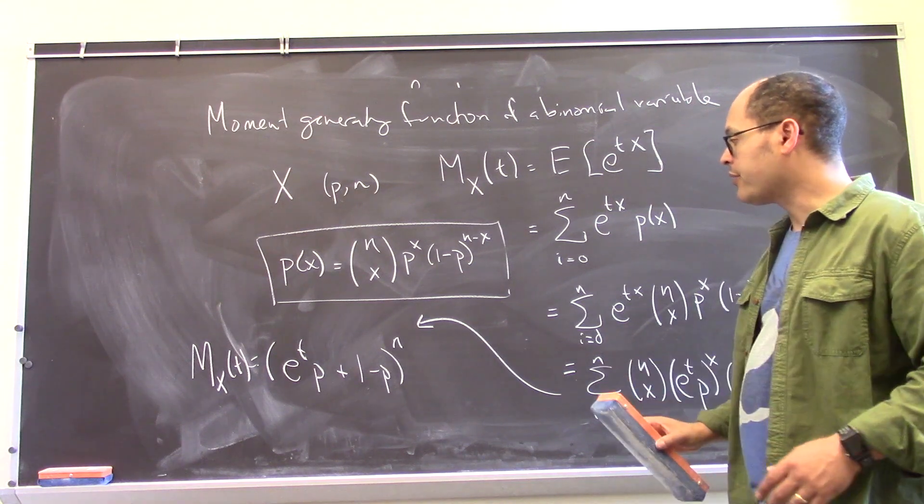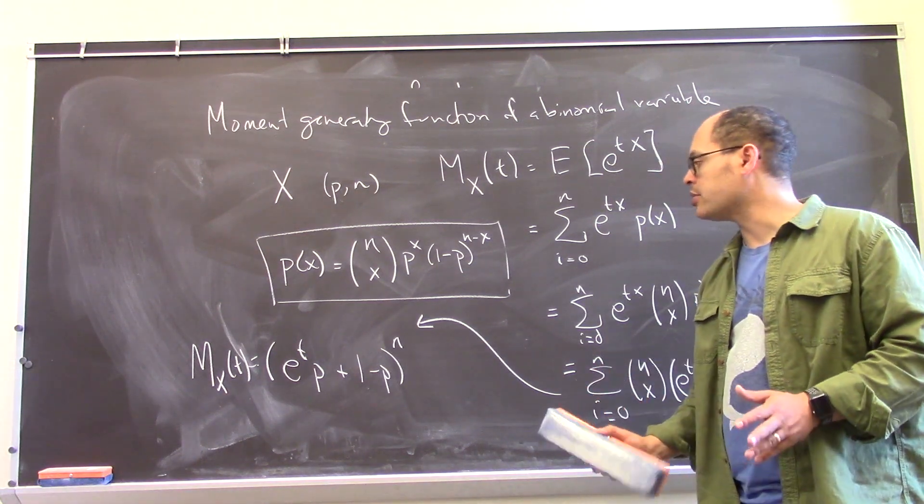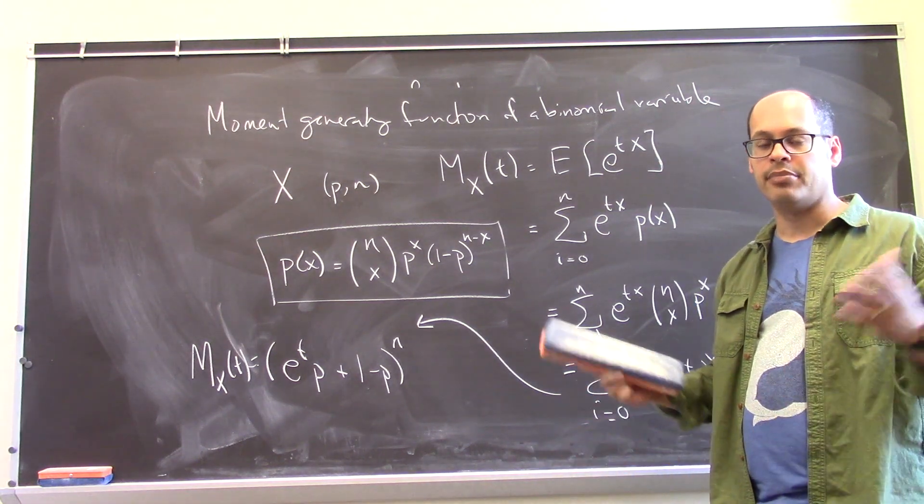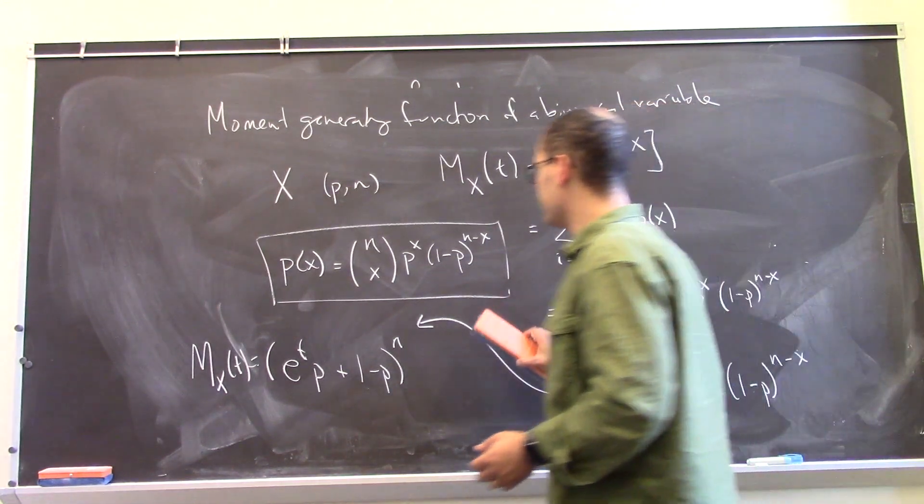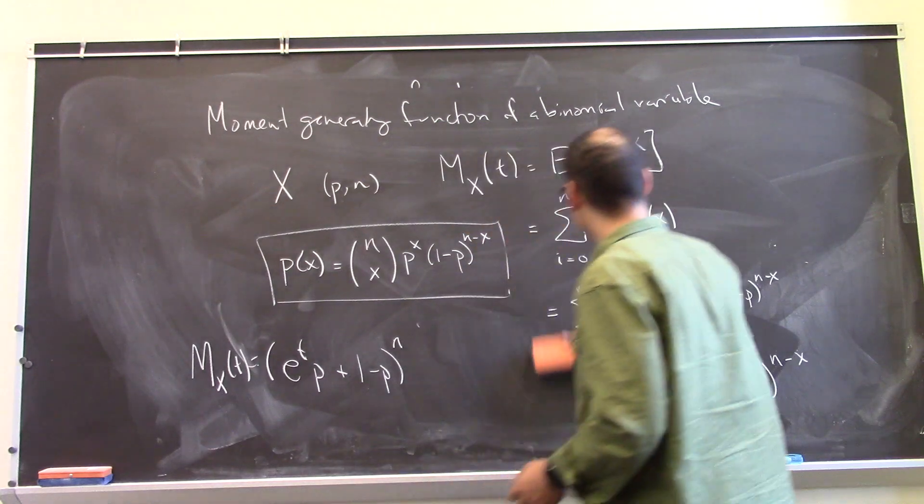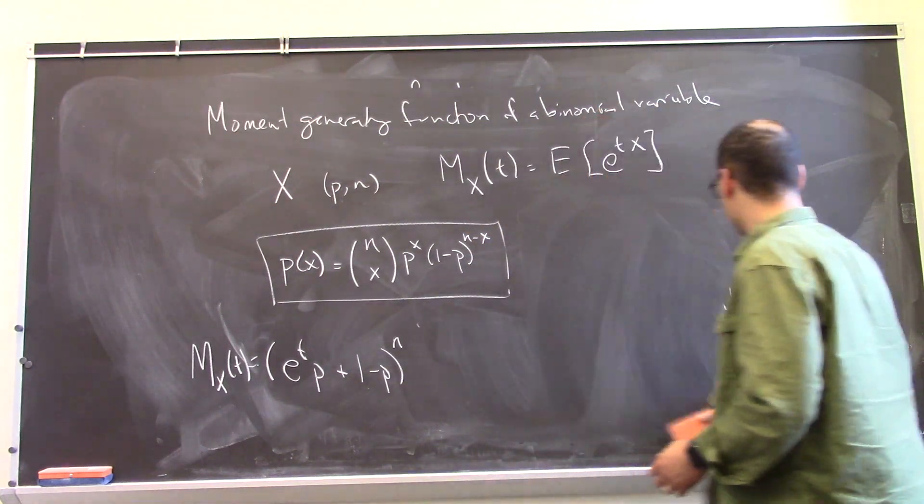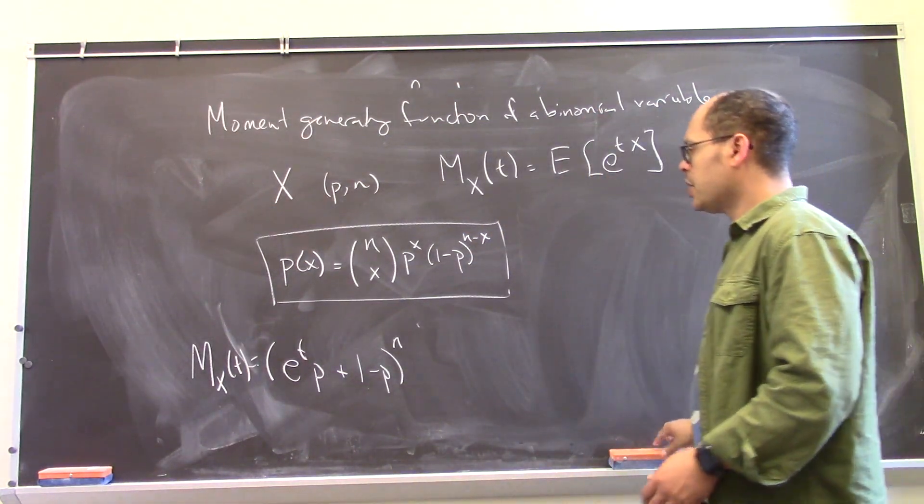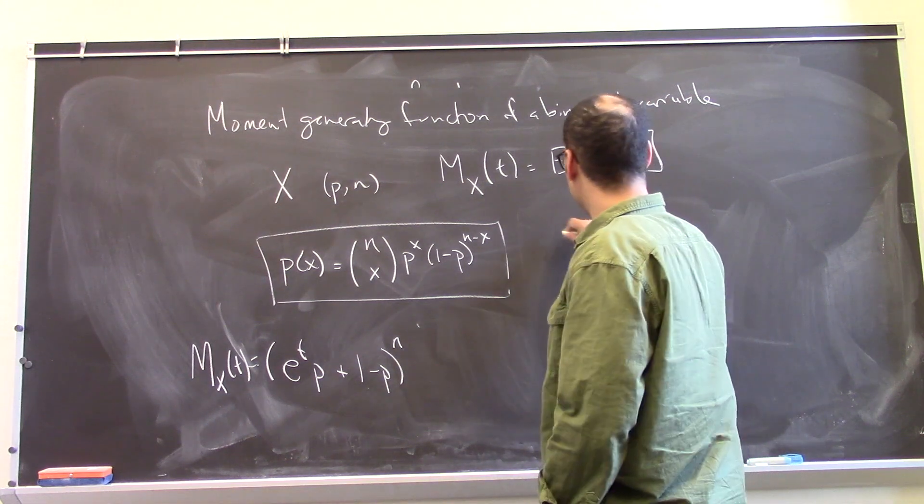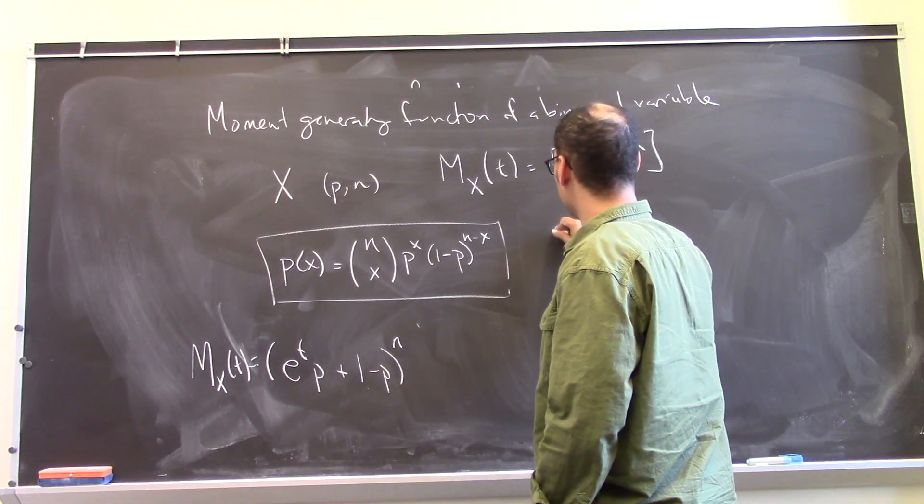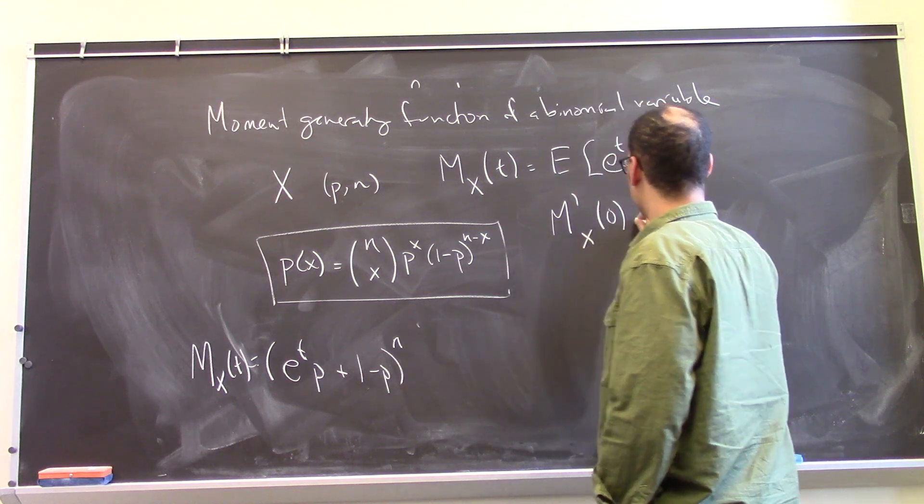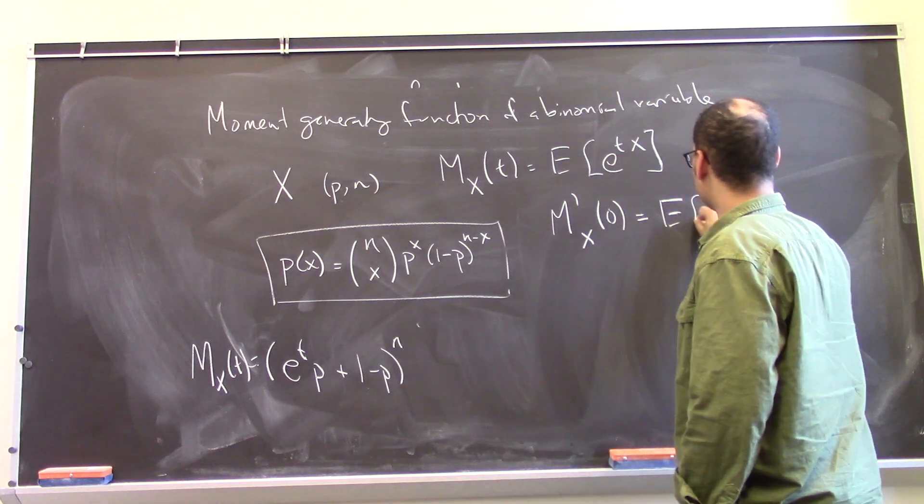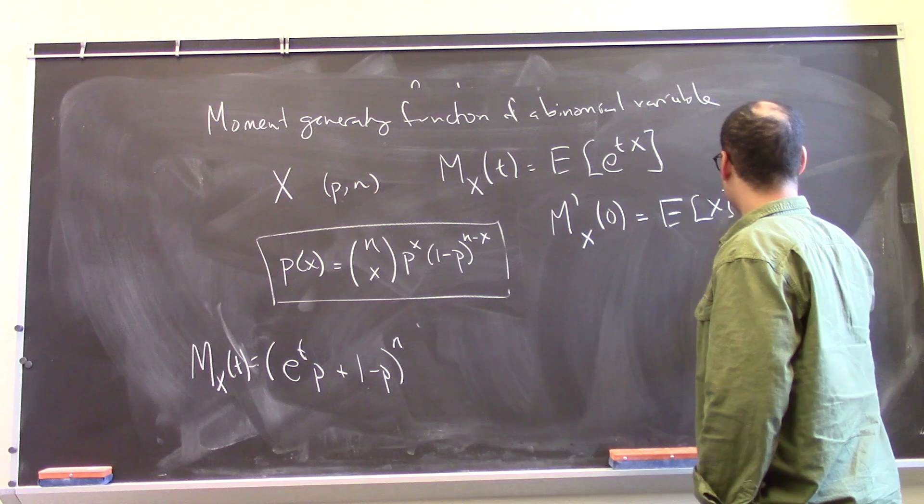Okay. So now that we have that, let's use that to quickly see things like the mean and variance of this variable. Let me go ahead and erase this. So for example, if I look at the first derivative and I plug in 0, this is the expected value of X, a.k.a. the mean.